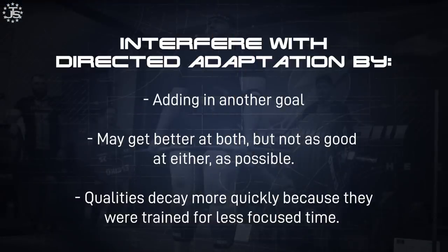As we introduce other goals, we interfere with directed adaptation. The less time you train one singular goal, the quicker those qualities are going to decay. Even if you make some improvement in fives, because you didn't have dedicated time focused on just training the fives, your best ability to squat those fives is going to go away rather quickly. You can learn more by watching our principle of specificity video or reading the book Scientific Principles of Strength Training.